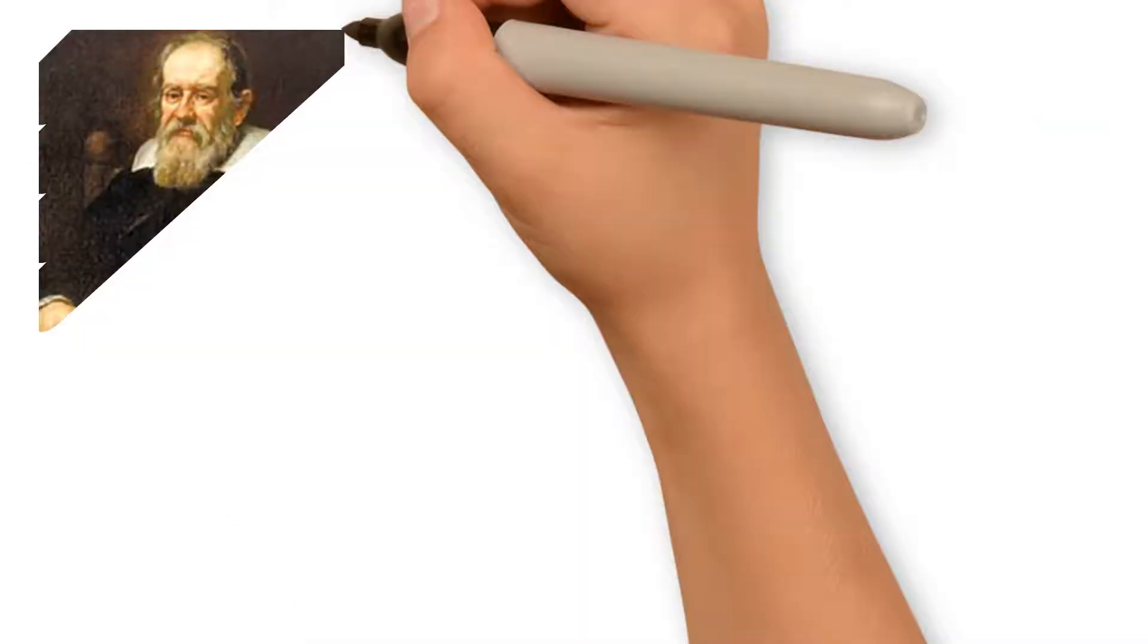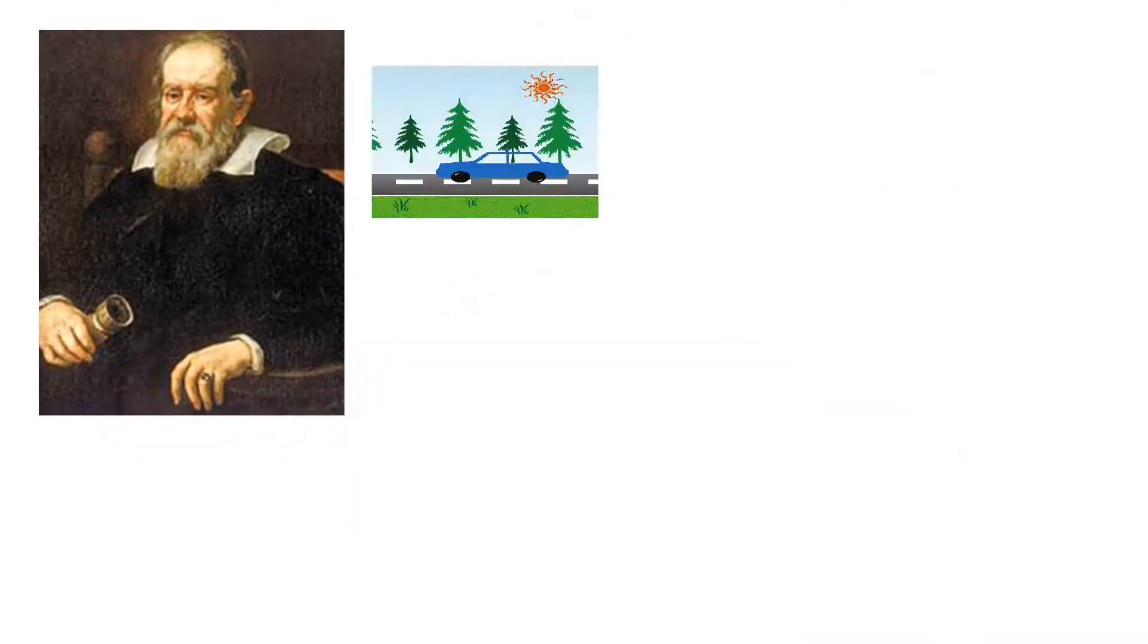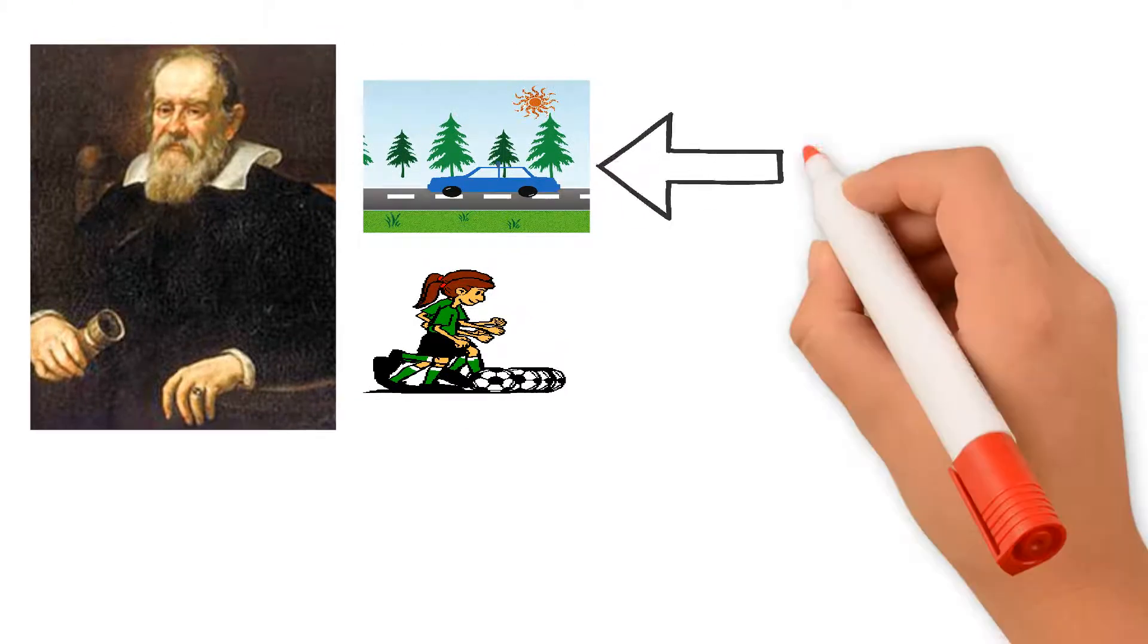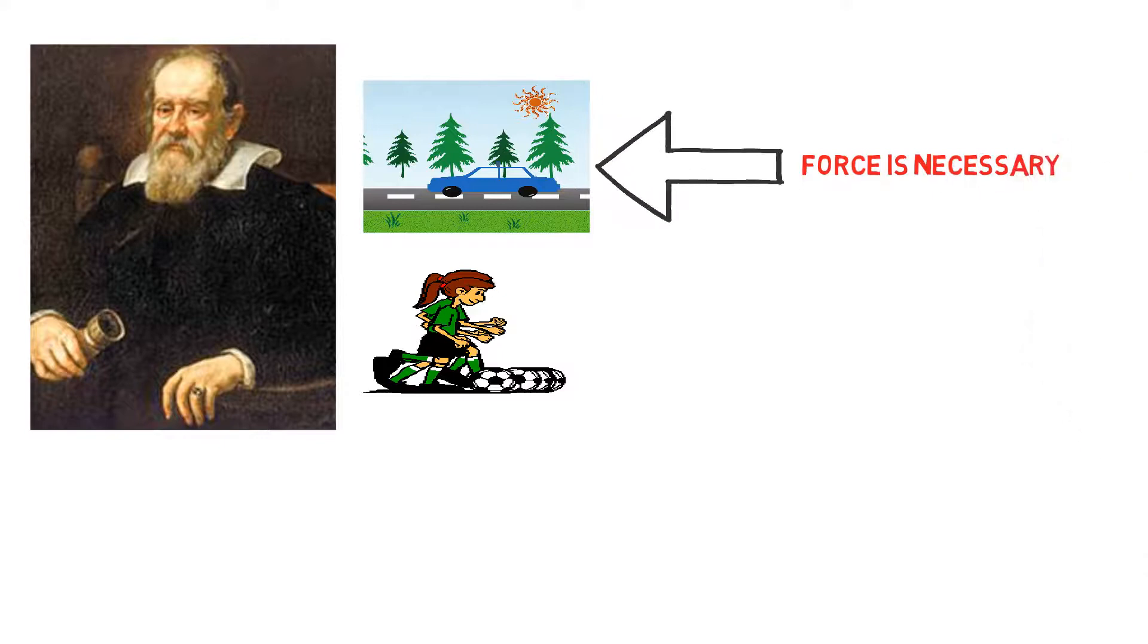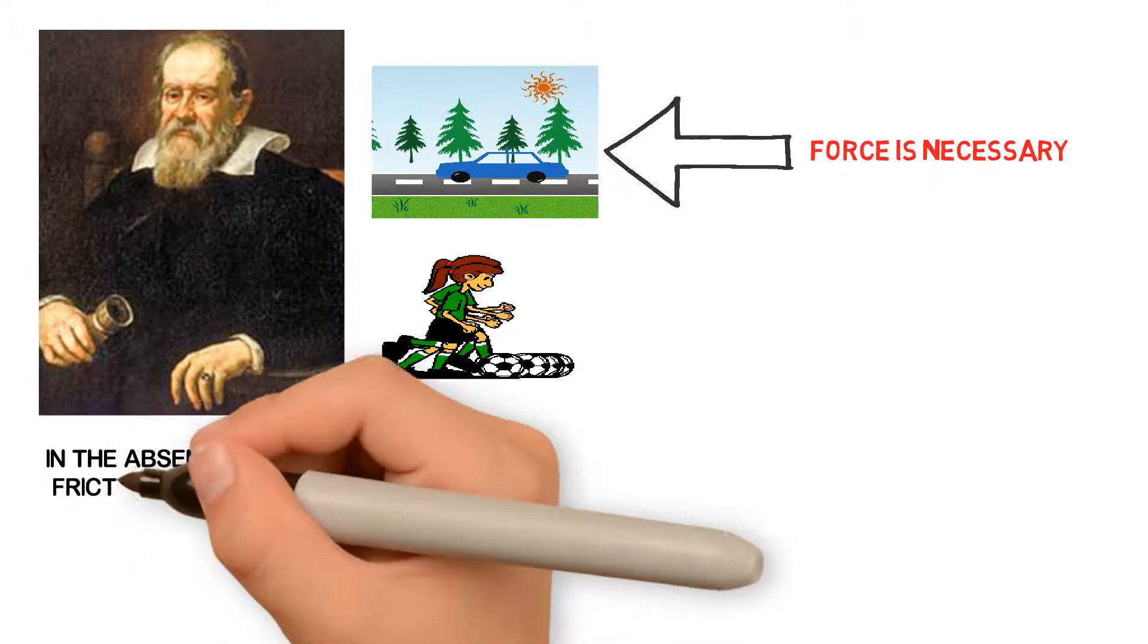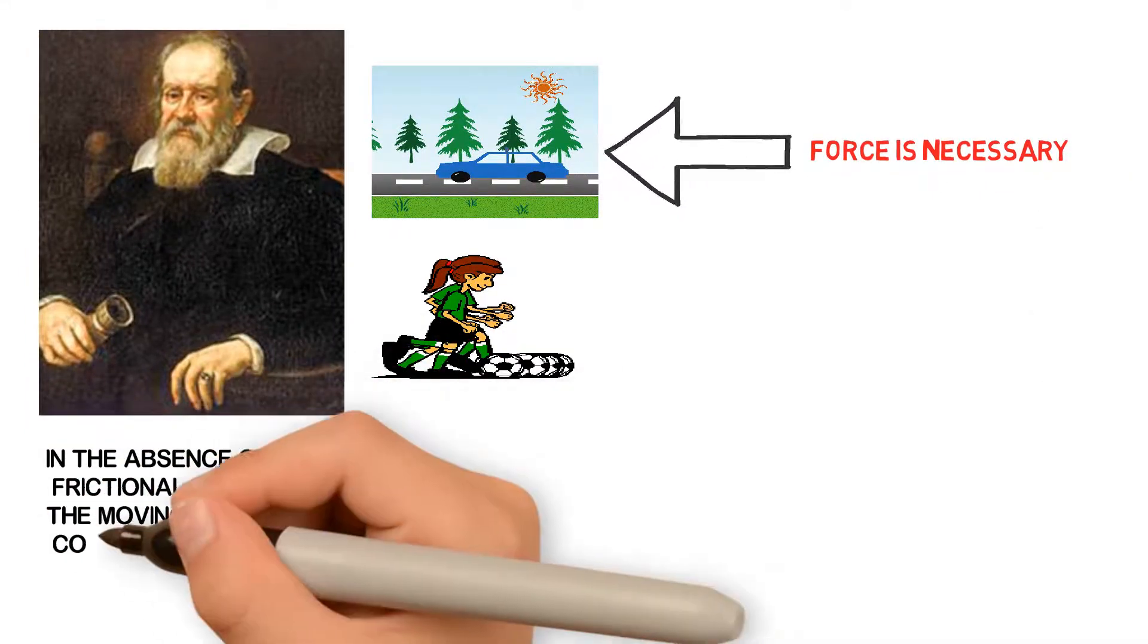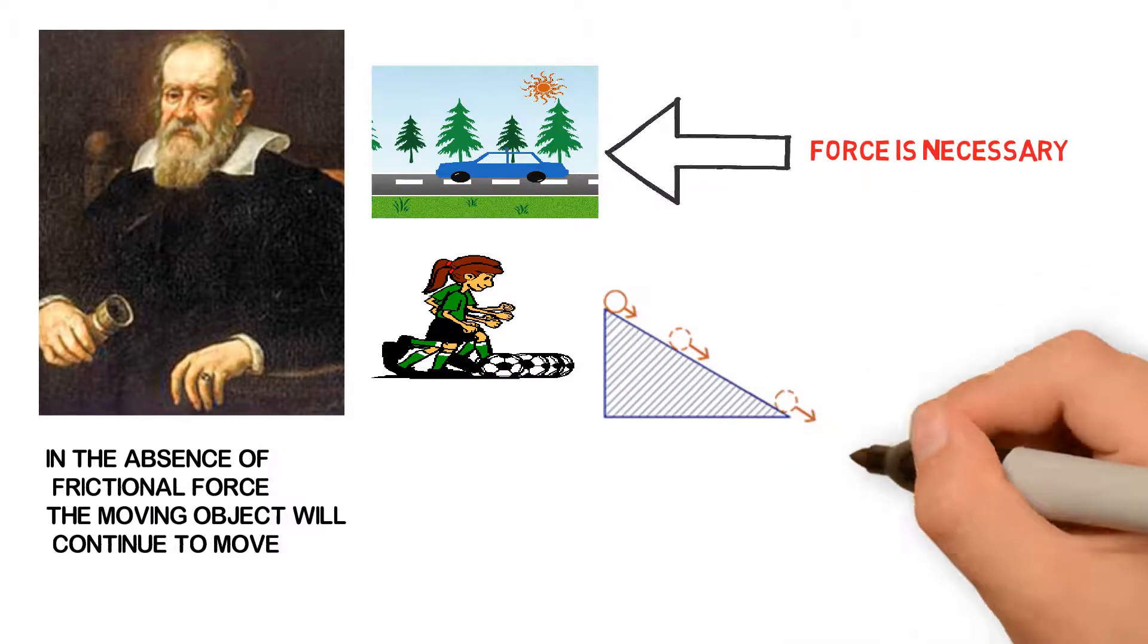Later, Galileo in the 17th century explained that in order to produce acceleration in a body or if you want to change the velocity of a body, then force is needed. A moving object eventually stops due to the presence of frictional force, and in the absence of this force, the moving object will continue to move.